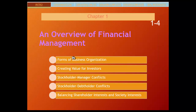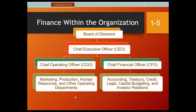For the introduction, we cover the forms of business, the emphasis on creating value for investors, the two types of conflicts — shareholder and managers, and stockholders and debt holders — and how to balance among these groups. The typical corporation has its owners who elect a board of directors. The board of directors is responsible for establishing the values and the vision of a particular corporation, and also hires the chief executive officer who is in charge of executing the marching orders from the board of directors.